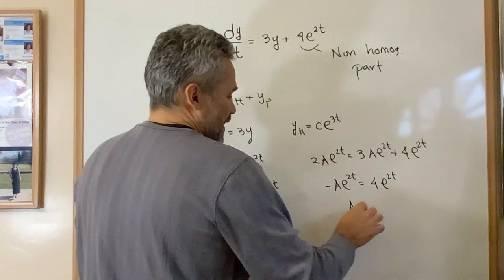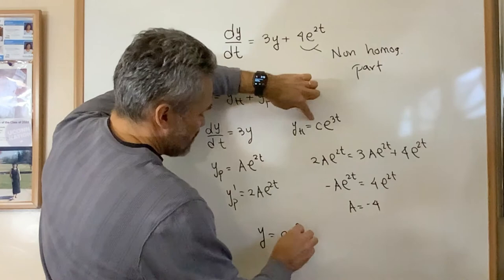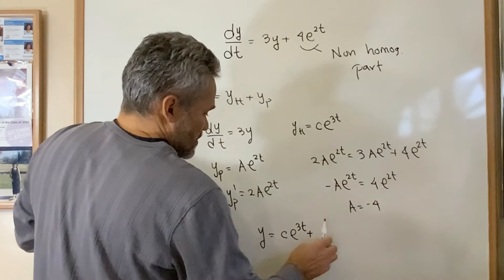And that means that the general solution of our differential equation is the solution of the homogeneous, which is c e to the 3t plus the particular solution, which will be minus 4e to the 2t.